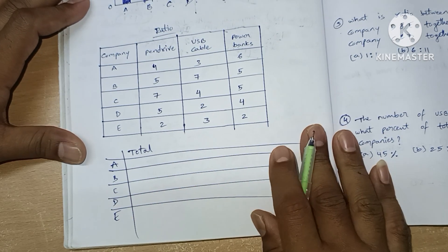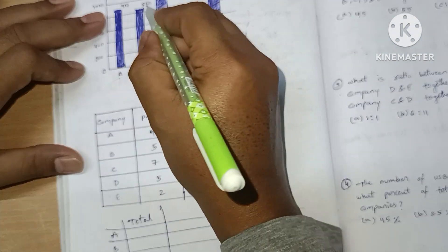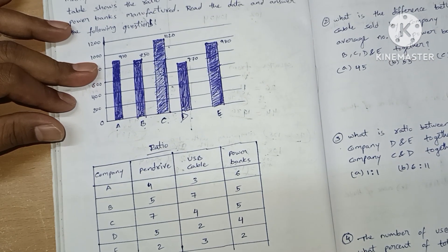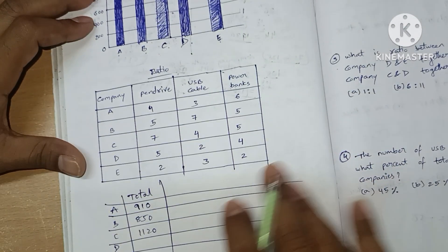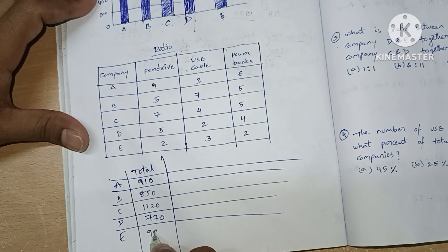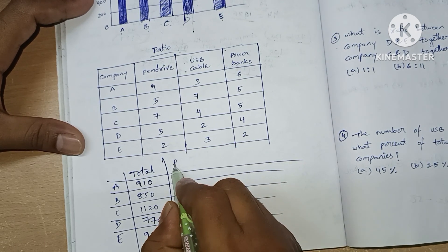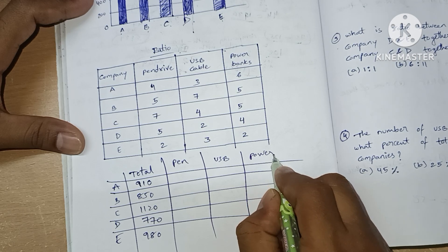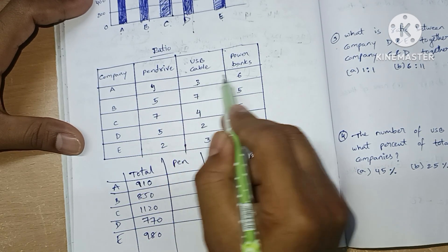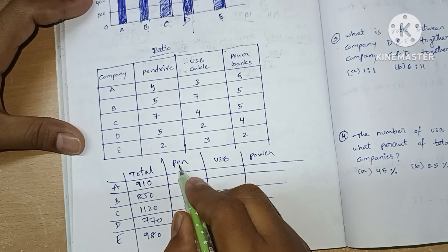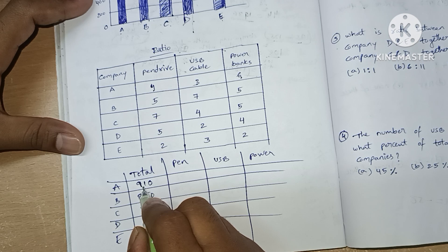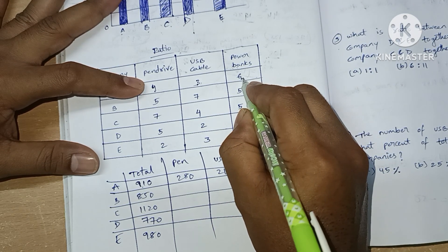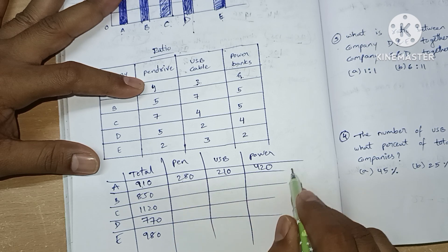The total manufactured values are: 910, 850, 1120, 770, and 980. For Company A, the ratio parts are 4+3+6 = 13 parts, and the total is 910. So one part equals 70. Therefore pen drives = 4×70 = 280, USB cables = 3×70 = 210, and power banks = 6×70 = 420.